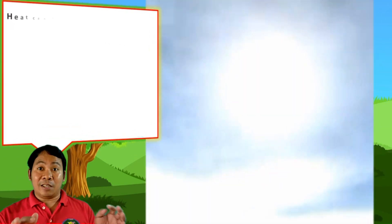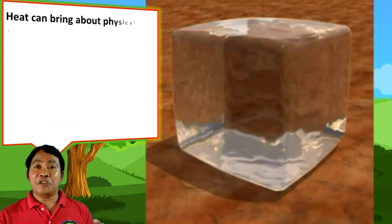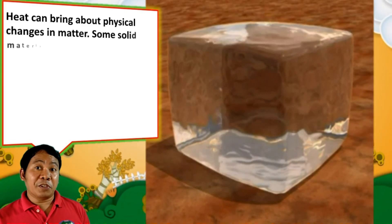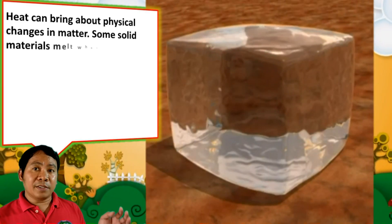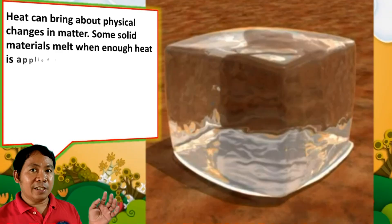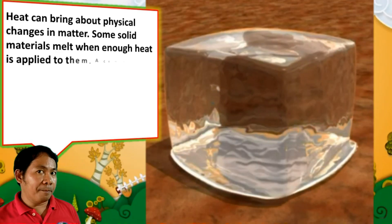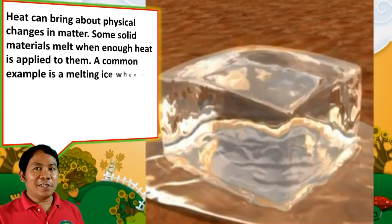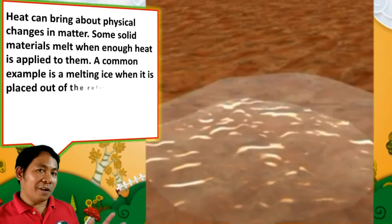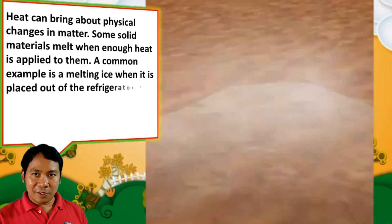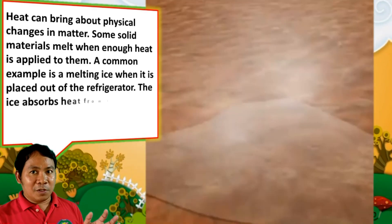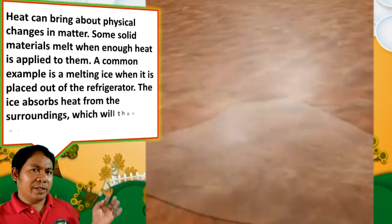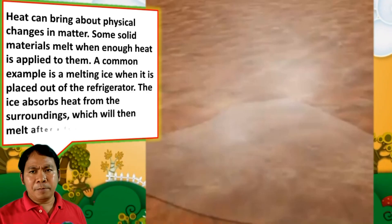Heat can bring about physical changes in matter. Some solid materials melt when enough heat is applied to them. A common example is melting ice — when placed out of the refrigerator, the ice absorbs heat from the surroundings and will melt after a few minutes.